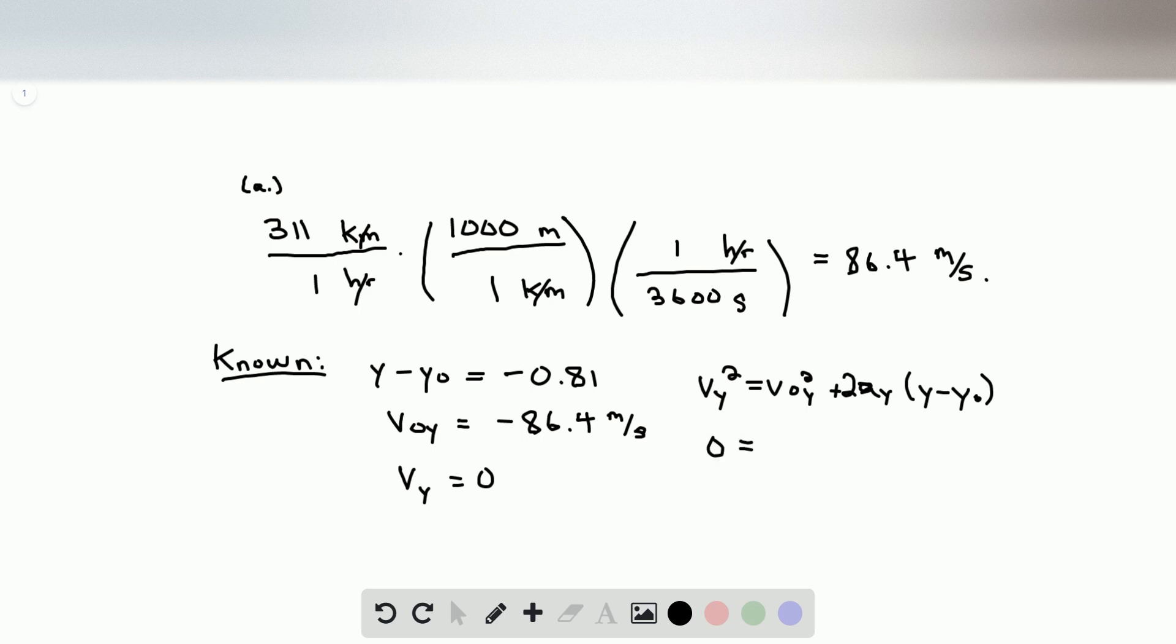This yields 0 is equal to 7465 plus 2 times the acceleration with respect to y times negative 0.81.